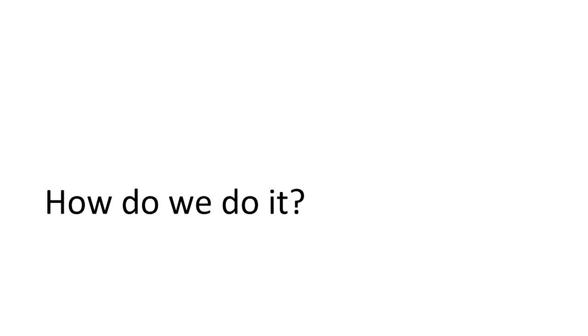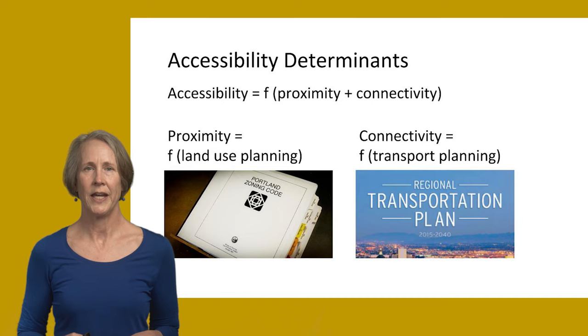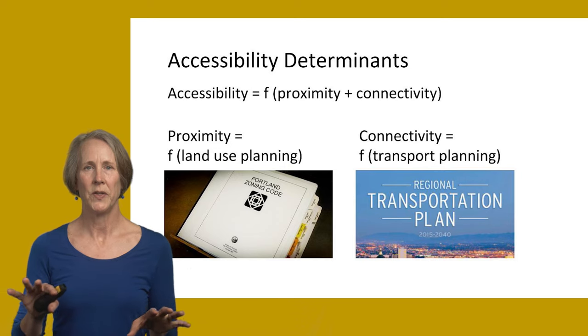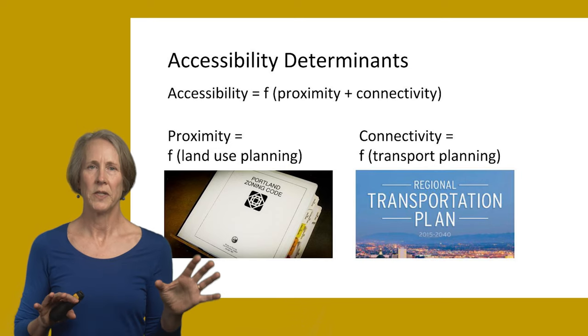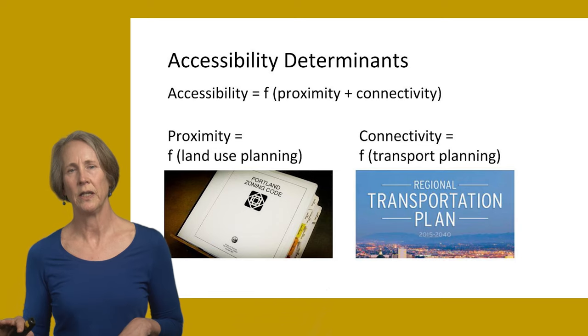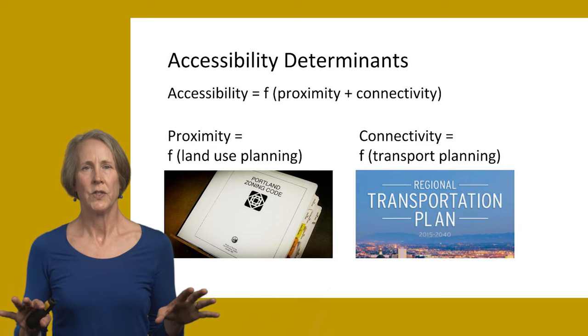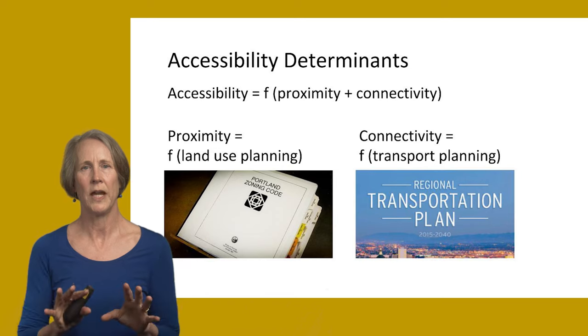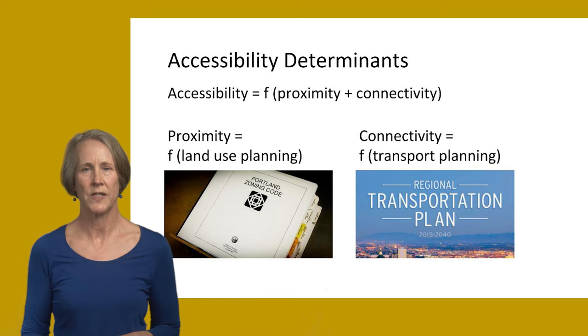So how do we do it in the end? Remember that accessibility is a function of both proximity and connectivity, which means we've got to think about accessibility when we do land use planning as well as when we do transportation planning — it really takes both components. One of the challenges is that these two functions have tended to be separate, not only within local government, but also because a lot of important transportation planning happens at the regional level, whereas land use planning is done at the local level. It's an ongoing challenge to better coordinate all of that planning.